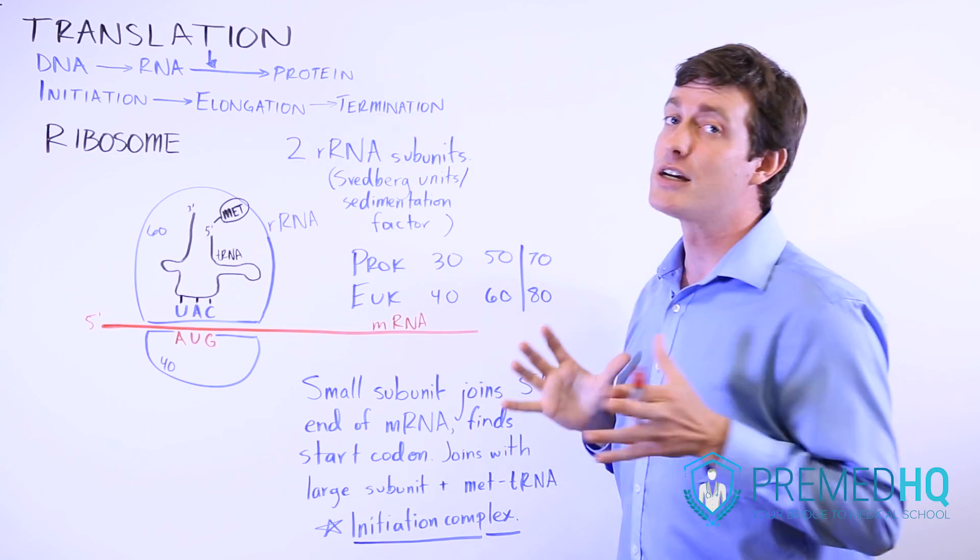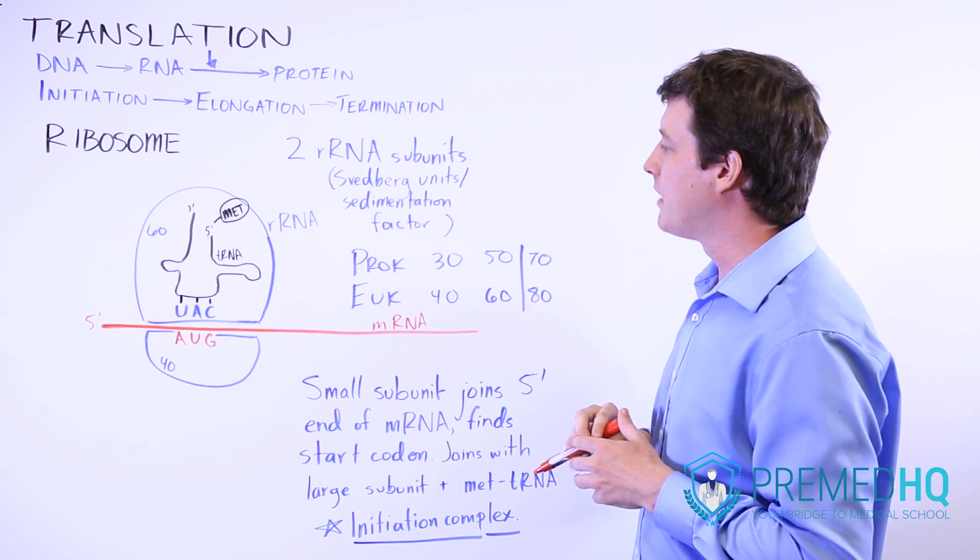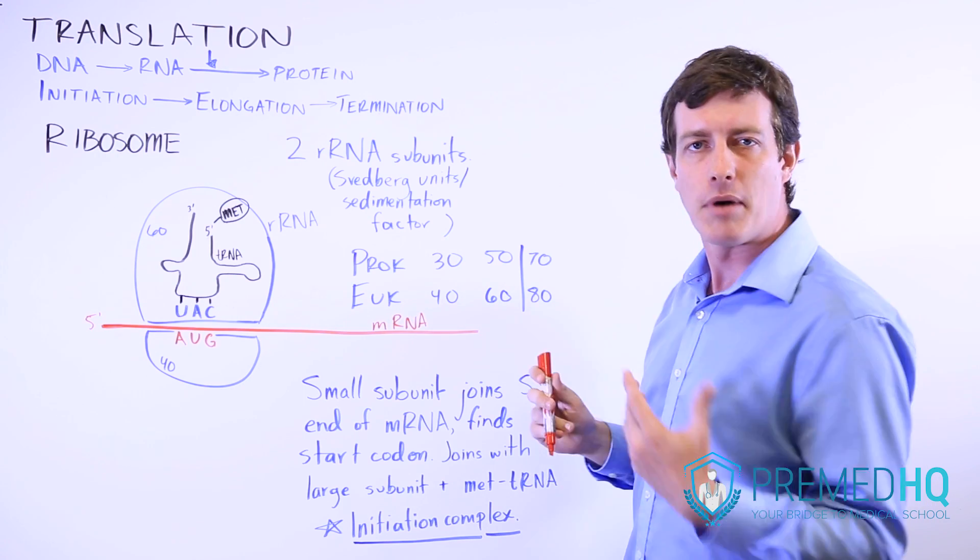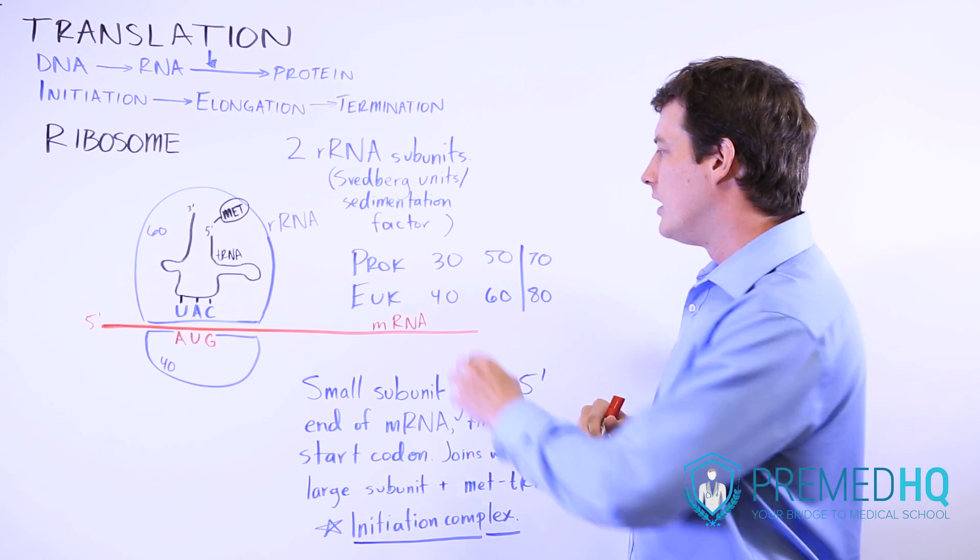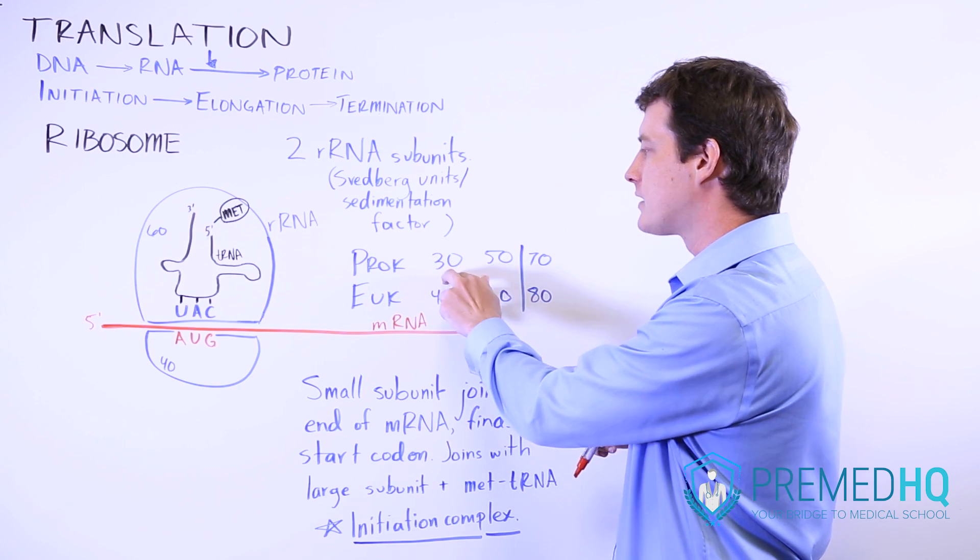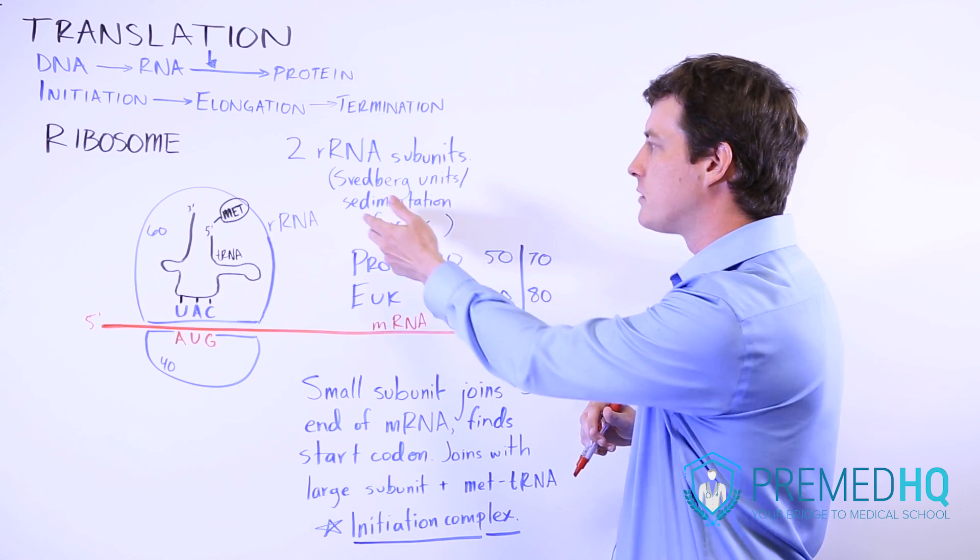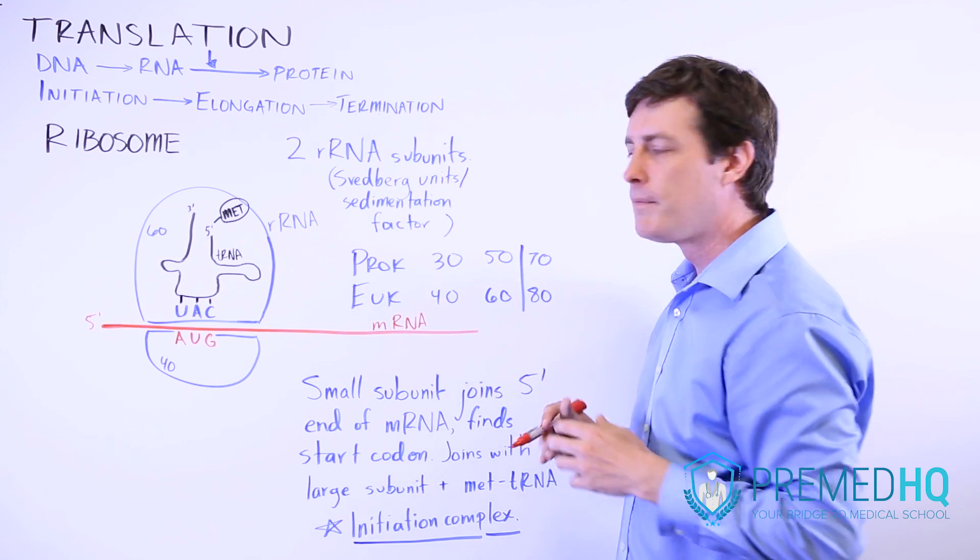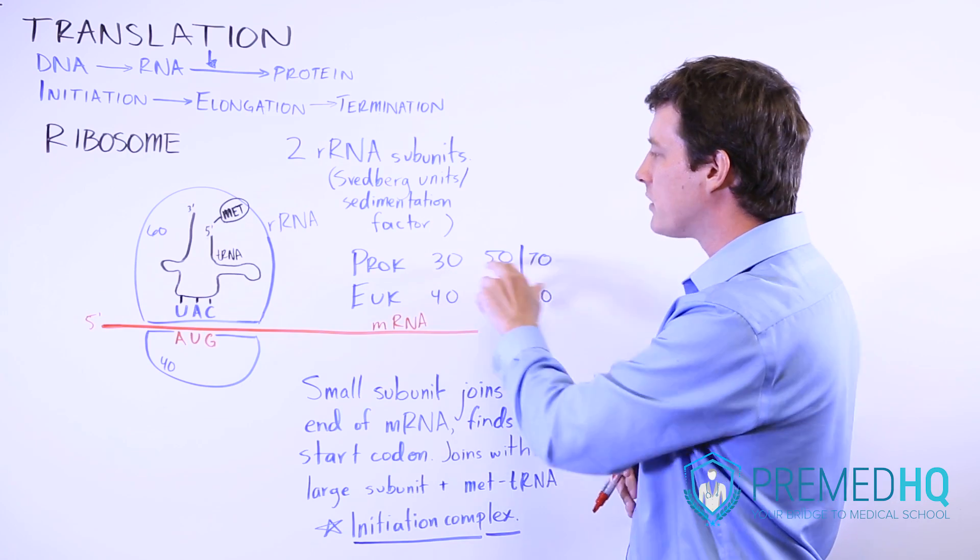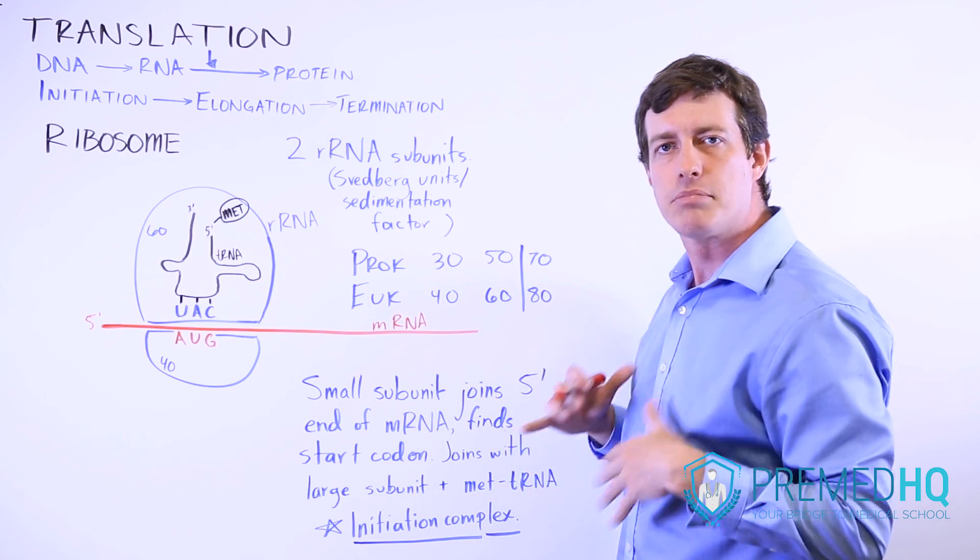Later on, this becomes very important, for example, when you're looking at antibiotics. Those might target the 30 or 50 S unit—30 S, S meaning sedimentation or Svedberg. These two subunits are distinctively prokaryotic.